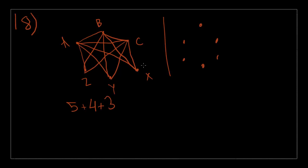Point X is already connected to 3 other points. So there's only XY and XZ. That's plus 2. And from point Y, it's already connected to 4 other points, and it can only connect to point Z for another extra line. So the total number of lines is 5 plus 4 plus 3 plus 2 plus 1, which is 15. And that is choice A.